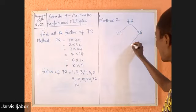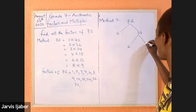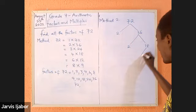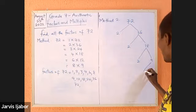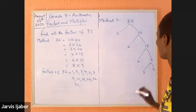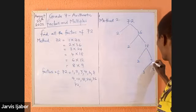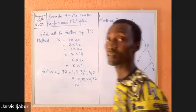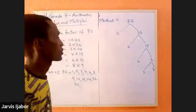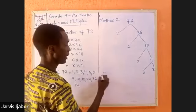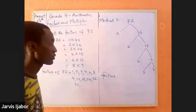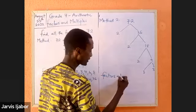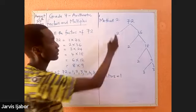Method 2. I can split 72 into 2 times 36. I can split 36 into 2 times 18. I can split 18 into 2 times 9, and I can split 9 into 3 times 3. So with this method, I'm going to list my factors out now. How do I list my factors? I will start with 1.